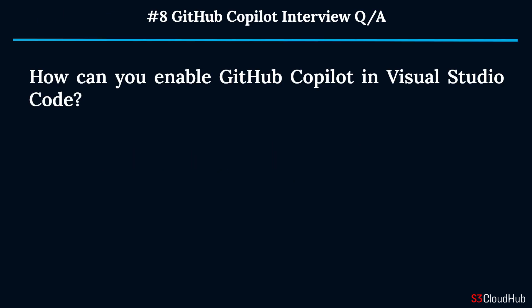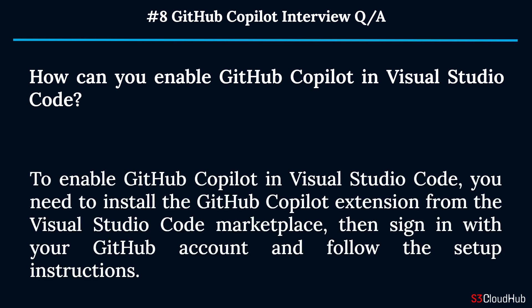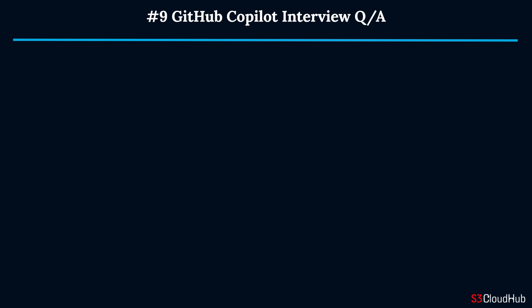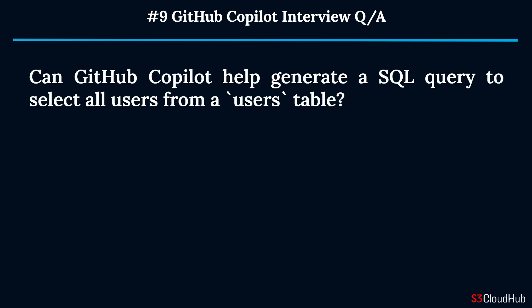Question eight: How can you enable GitHub Copilot in Visual Studio Code? To enable GitHub Copilot in Visual Studio Code, install the GitHub Copilot extension from the Visual Studio Code Marketplace, then sign in with your GitHub account and follow the setup instructions.